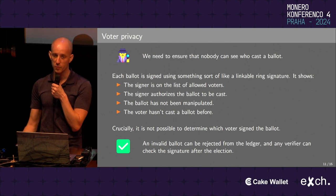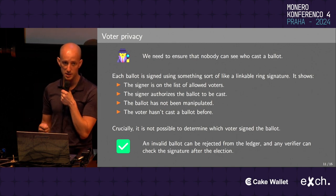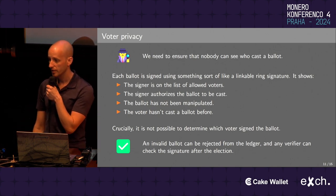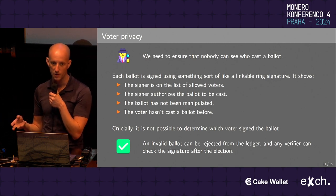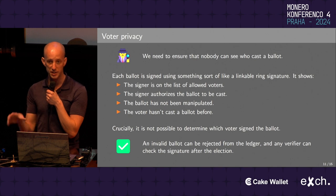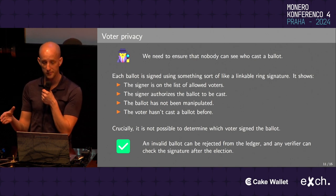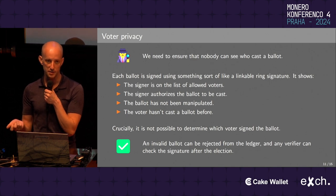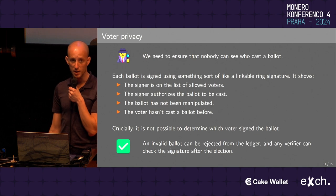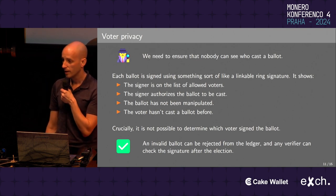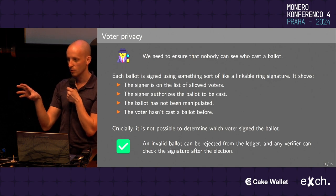How do we achieve voter privacy — knowing the ballot selections are valid, but not being able to identify which voter cast it? We use techniques from privacy-respecting digital asset protocols. Every ballot is signed using something like linkable ring signatures as used in Monero and other asset protocols. This shows that the signer is on the list of allowed voters set up by the organizer, that the signer authorizes the ballot without it being manipulated, and using the linkability property of ring signatures, that the voter hasn't cast a ballot before — avoiding double voting. Importantly, it's not possible to determine which voter actually signed it.